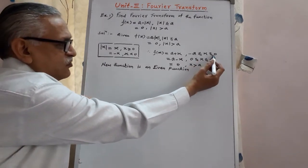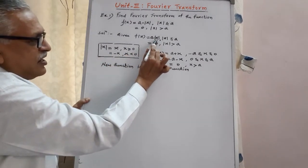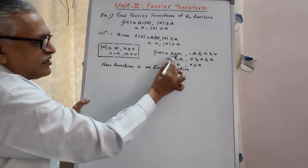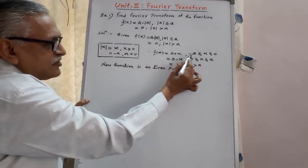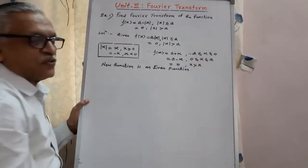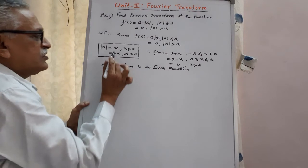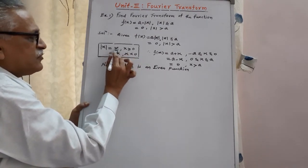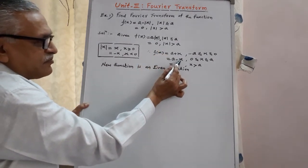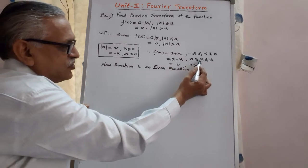For the negative values between minus a to 0, the mod x value is minus x. So substituting that, minus and minus becomes plus, and the function value is a plus x for all values between minus a to 0. Then for 0 to a, when x is positive, mod x is plus x, so substituting gives a minus x. Therefore the function value is a minus x for the range 0 to a.